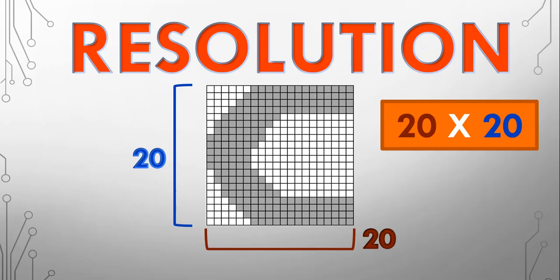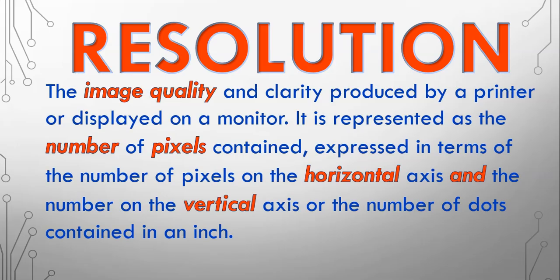And if we keep doing this, it'll get to the point where you can't even see the different little blocks. This is basically the idea behind resolution. The formal definition is the image quality and the clarity produced by a printer or displayed on a monitor. It is represented as the number of pixels contained or expressed in terms of the number of pixels based horizontal axis or the number of pixels on a vertical axis that are contained in an inch. The actual measurement is different depending on the type of hardware.